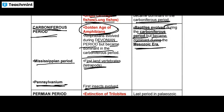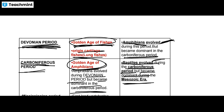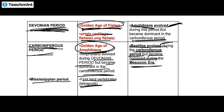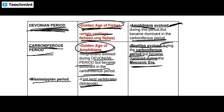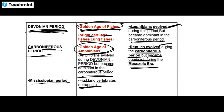Looking at the key points: in the Devonian period, fishes are dominant — it is the golden age of fishes. At the same time, amphibians evolved. But they became dominant in the Carboniferous period, which is the golden age of amphibians. Along with the dominant amphibians, reptiles evolved during the Carboniferous period, but became dominant in the next era.